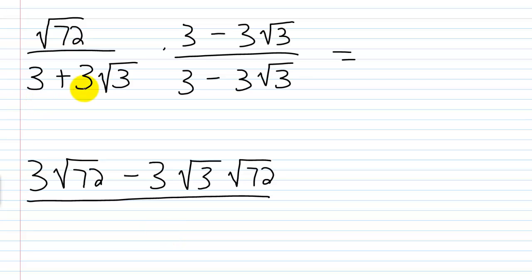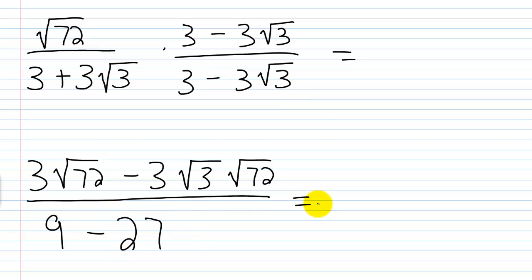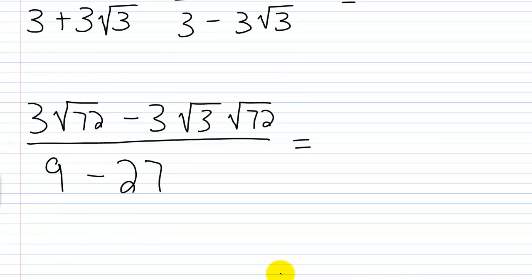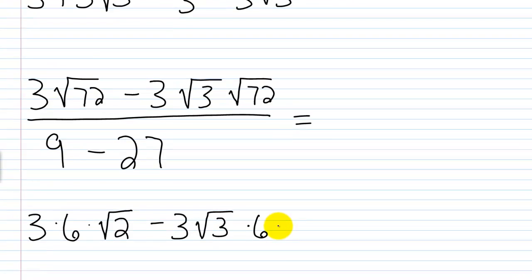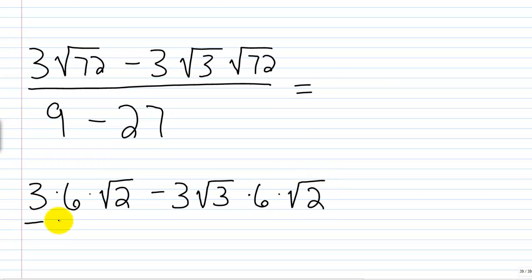In the denominator we use our trick: first times first — 3 times 3 is 9 — then minus last times last — 3 times 3 is 9, and square root of 3 times square root of 3 is 3, so 9 times 3 is 27. Now to simplify: 72 is 36 times 2, and 36 is a perfect square, so square root of 72 is 6 times square root of 2. Then we have minus 3 times square root of 3 times 6 times square root of 2, over 9 minus 27, which gives negative 18.